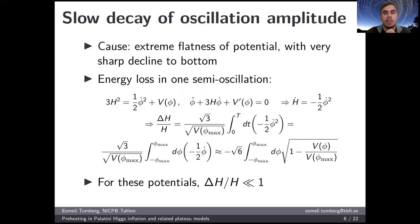Before I move on to discuss the actual particle production in these models, let me clarify what kind of potentials actually produce this behavior. The cause of this slow decay of the oscillation amplitude is extreme flatness of the potential, with a very sharp decline of the potential towards the bottom and the minimum.